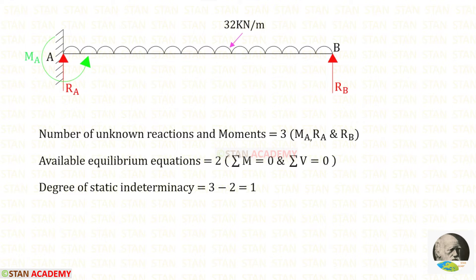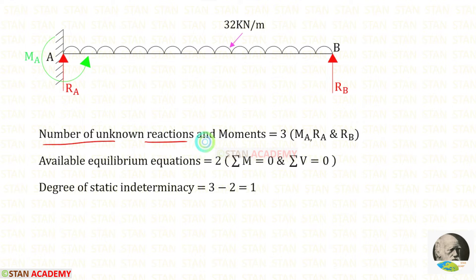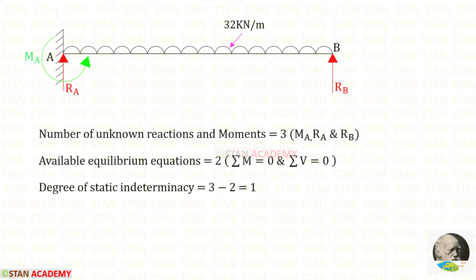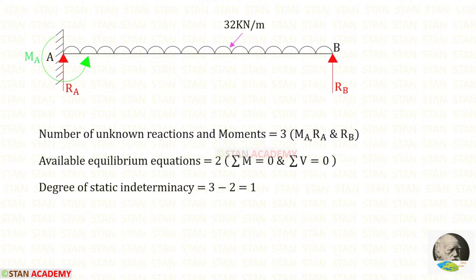Now let us find the degree of static indeterminacy. In this beam, the number of unknown reactions and moments are 3: the moment MA, and vertical reactions RA and RB. The available equilibrium equations are 2: sigma M equals 0 and sigma V equals 0. The degree of static indeterminacy is equal to 3 minus 2, which gives 1.